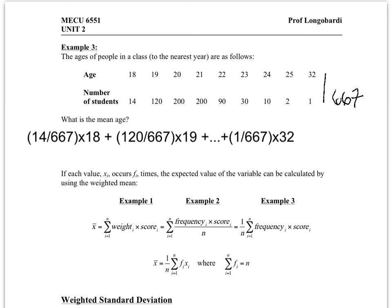For the second part, the second component, the weight is 120 divided by 667 times 19, the score for the second component, and so on.